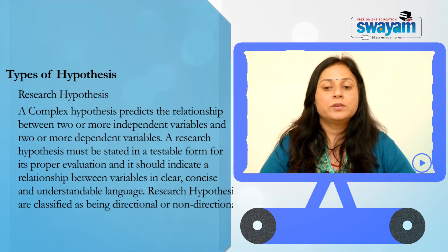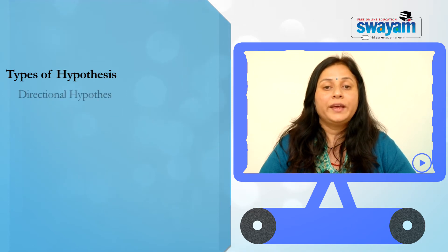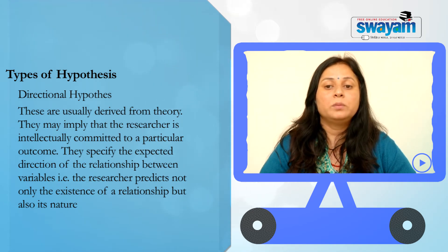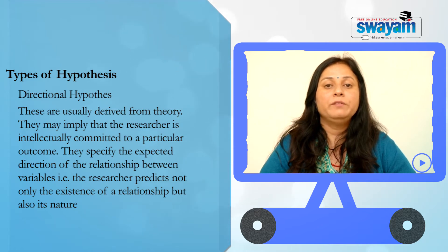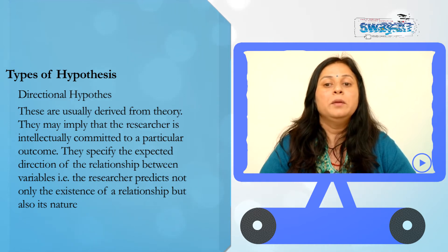Research hypotheses are classified as being directional or non-directional. A directional hypothesis is usually derived from theory. It may imply that the researcher is intellectually committed to a particular outcome. It specifies the expected direction of the relationship between variables — that is, the researcher predicts not only the existence of a relationship, but also its nature.